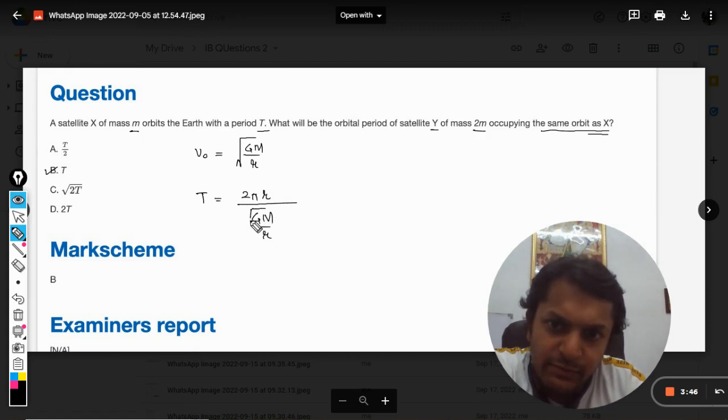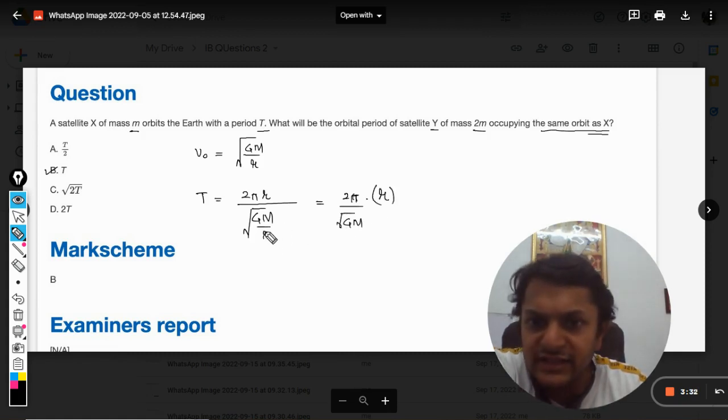That will be given by this. So in simple terms it will be like this, and r and GM I am keeping like this only, and r I am clubbing the powers. This is having half as its power and this r is having one as the power, so overall it will be one plus half, that will be three by two.